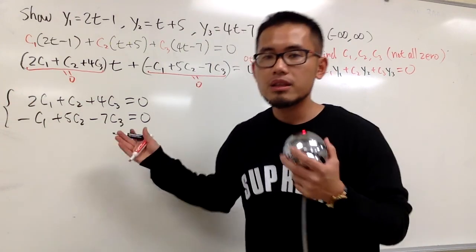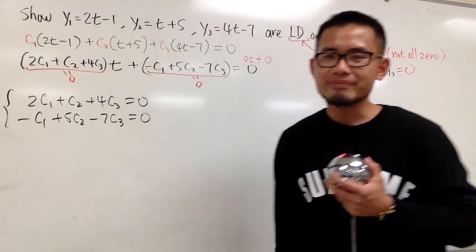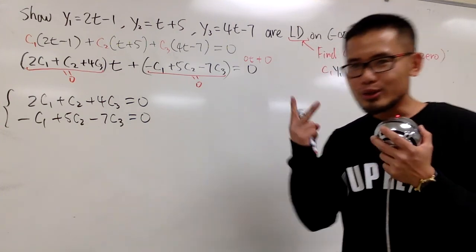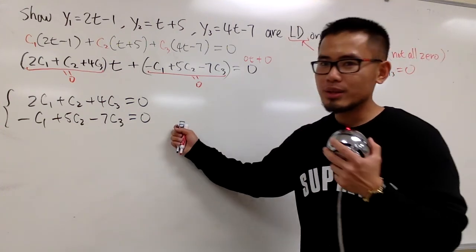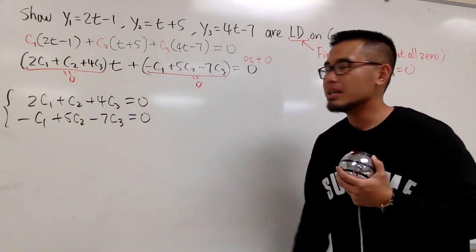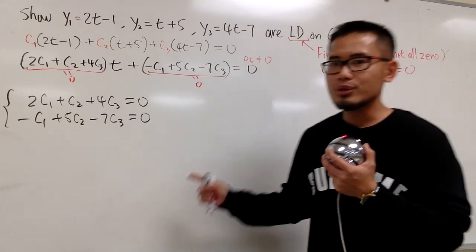First, let me just write it down. We will have 2c1 plus c2 plus 4c3 equal to 0. And next one, we have minus c1 plus 5c2 minus 7c3 equals to 0. And as we can see, this is a system of equations. How many unknowns? 3 of them. How many equations? Only 2. So you are guaranteed to have solutions in this case. And in fact, infinitely many solutions.